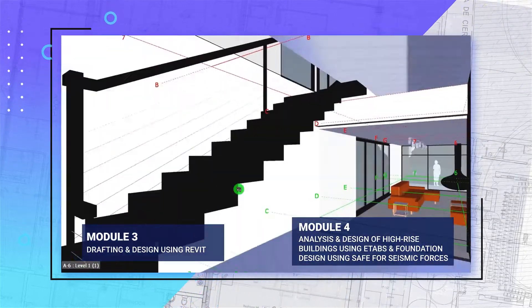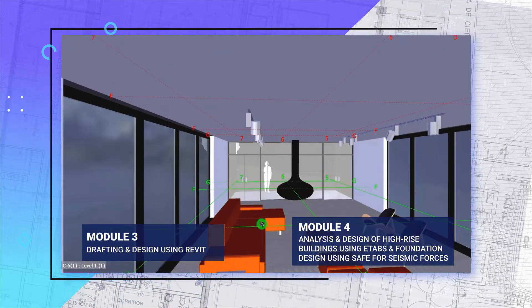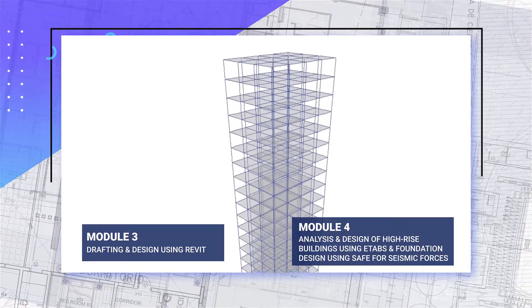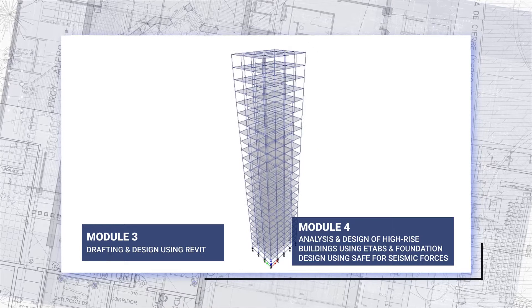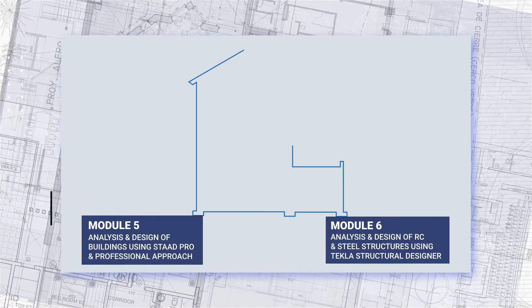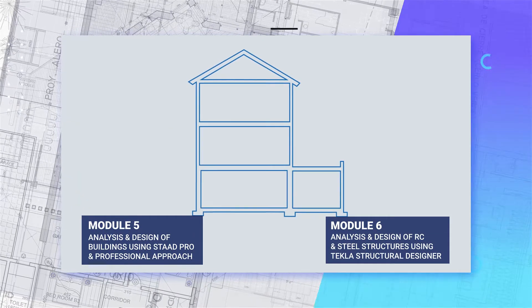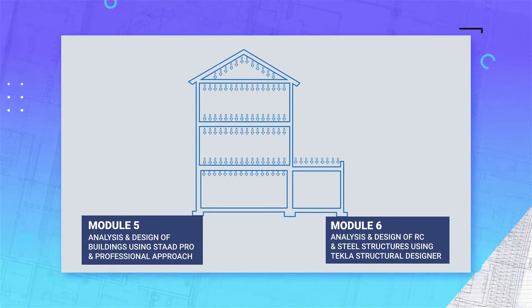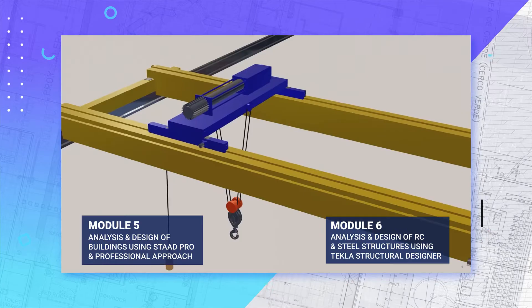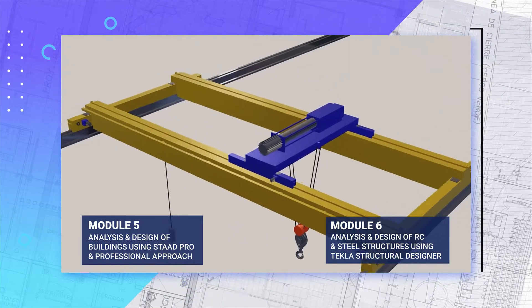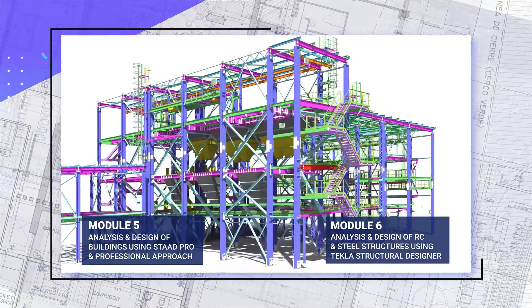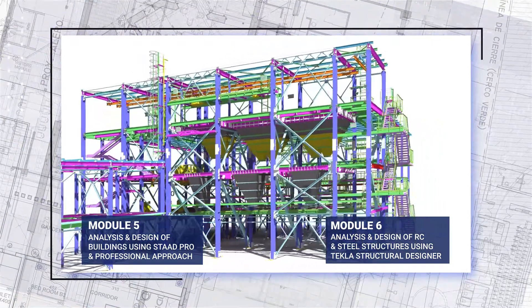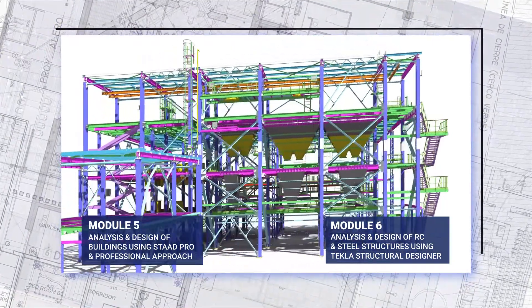From Modules 3 to 6, you will learn Revit to create building information models, E-tabs to design buildings for seismic zones, and STAAD Pro to analyze the effects of lateral and gravity loads on concrete structures and crane loads on steel structures. You will also learn Tekla to perform structural strength tests of building designs.